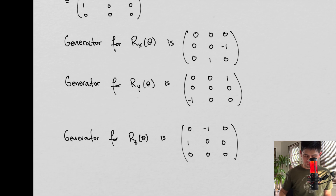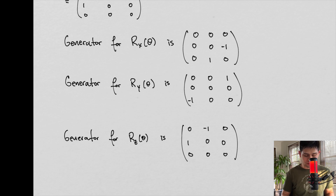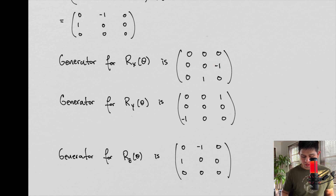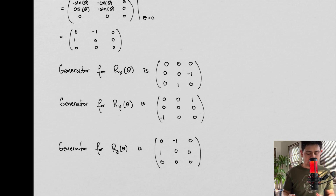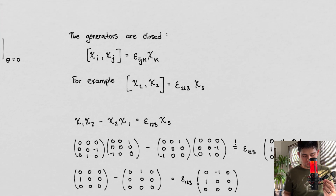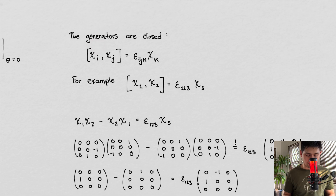What does this all mean? Well, these things don't look like rotations. What rotations look like are these guys — the parameter is what's going to tell us how much to rotate by. These generators just contain ones and zeros. So what we can find — and what we're going to see now — is that these generators are closed. This means that if we take two of our generators, we can obtain the other generator through this commutation relationship.